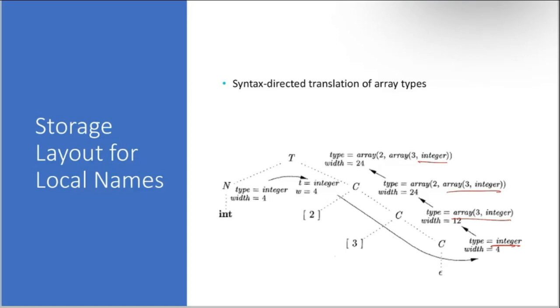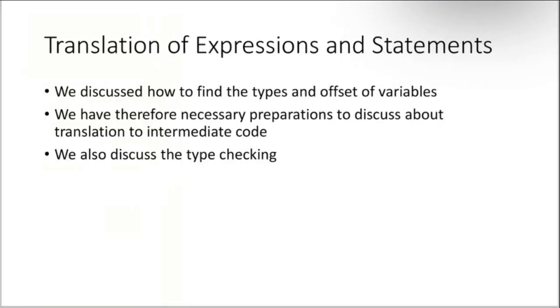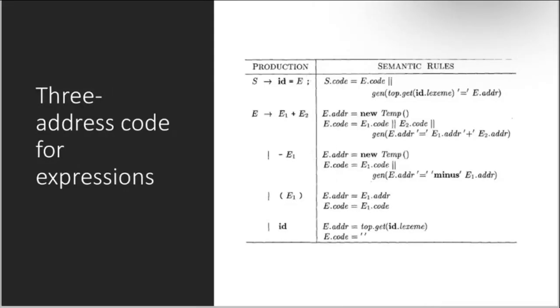Translation of expressions and statements. We discussed how to find the type and offset of the variables. We have therefore necessary preparations to discuss translation and intermediate code. We also discussed the type checking. We have already done all this thing. Then three address code for expressions.